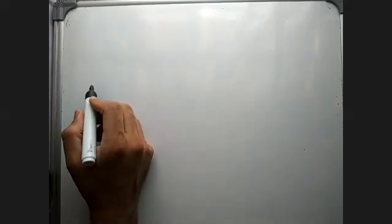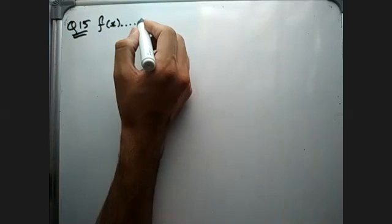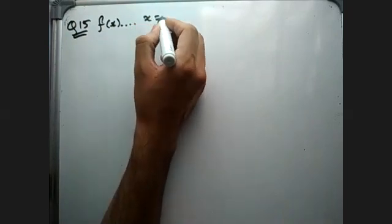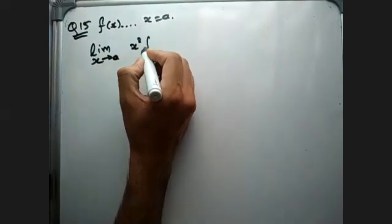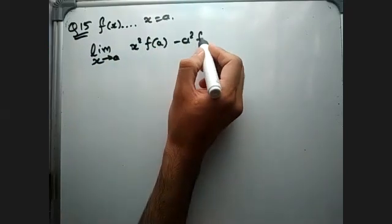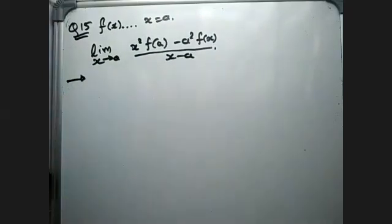Now question 15, suppose f of x is differentiable. Question number 15 is telling that f of x is differentiable at x equal to a, then limit x tends to a, x square f of a minus a square f of x divide by x minus... wait, this is question number 16. I have read it wrong.